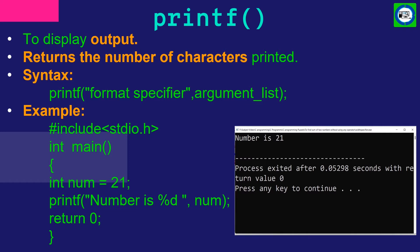The printf function is used to display output. The return type of printf is integer, and printf returns the number of characters printed. The syntax of printf contains a format specifier and an argument list. For example, we have taken the variable integer num equal to 21, and this variable num is passed as an argument in the printf function.